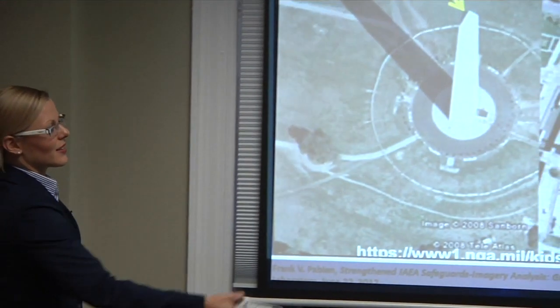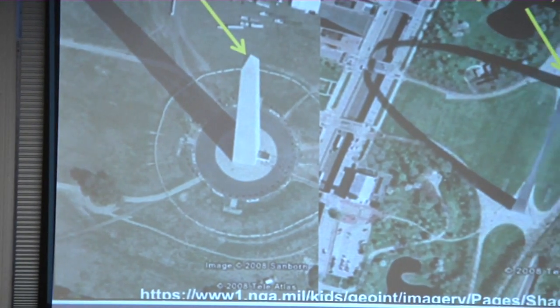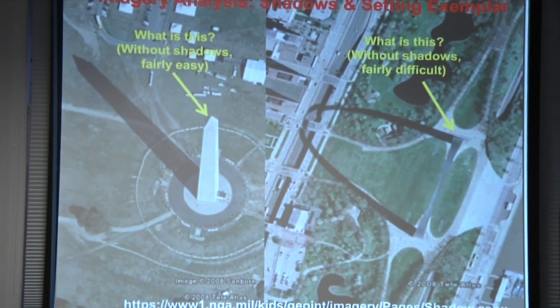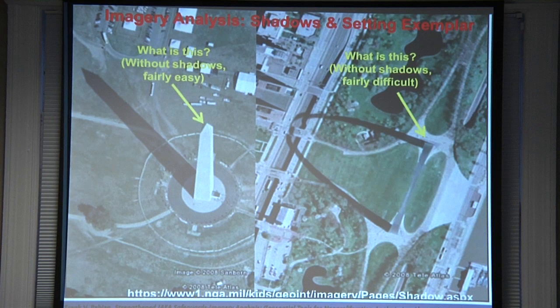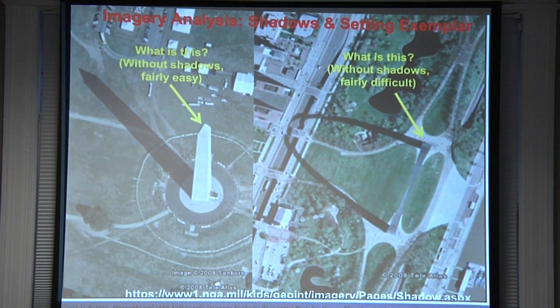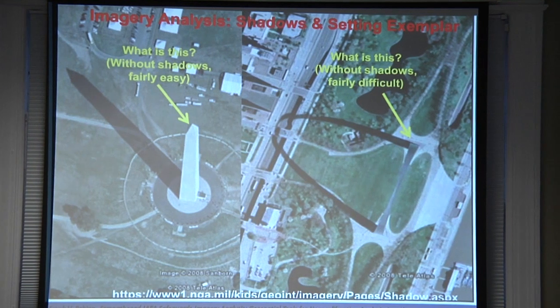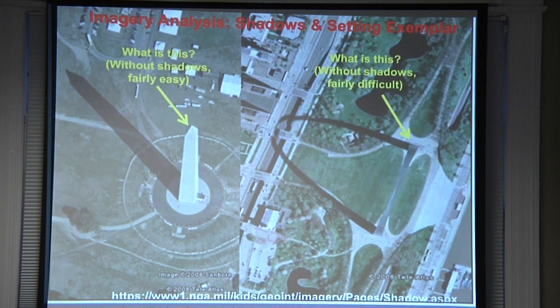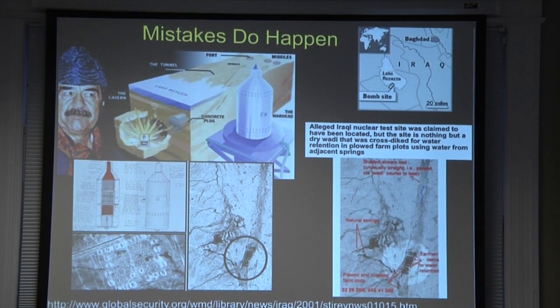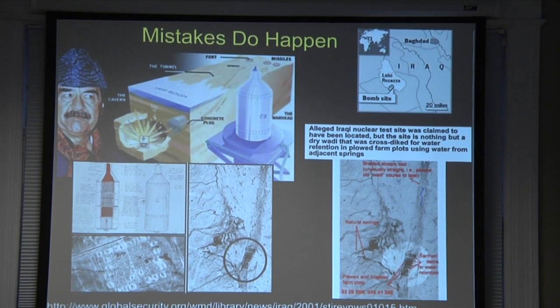Imagery by itself can also be quite deceiving. This example shows an object that's easily recognizable from the right-hand side, but if you didn't know what it was, you'd be trying to figure it out based only on its shadow — not directly recognizing it if you're unfamiliar with the area. That's one form of deception. You can make really bad mistakes with imagery.